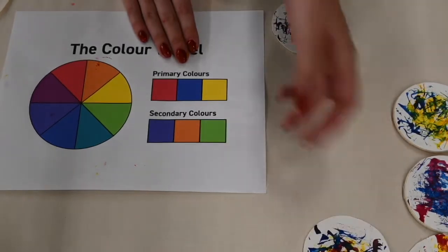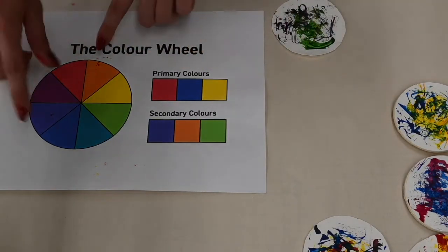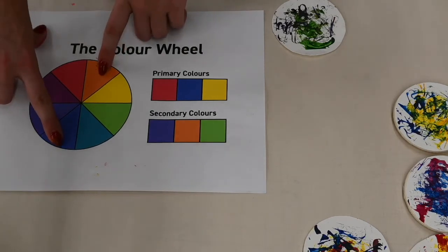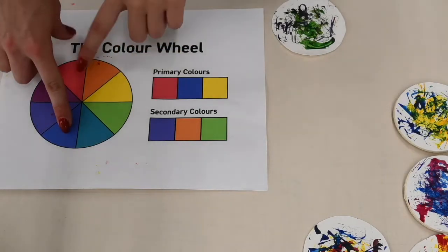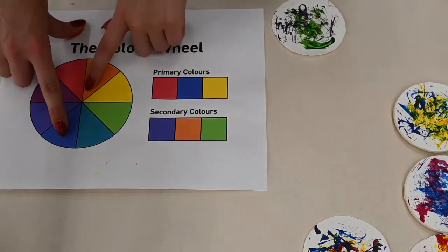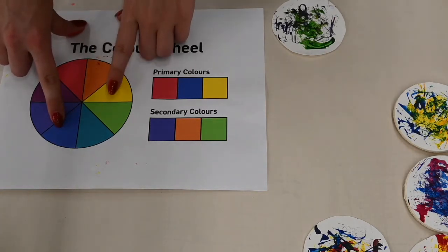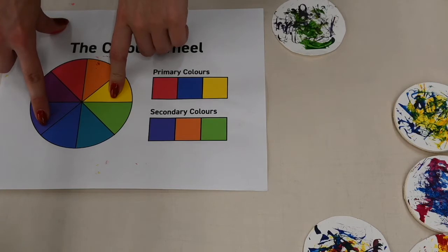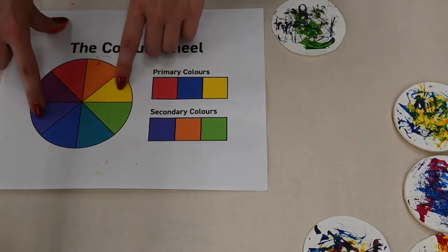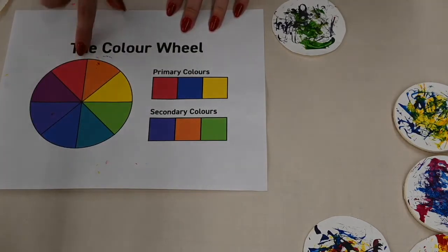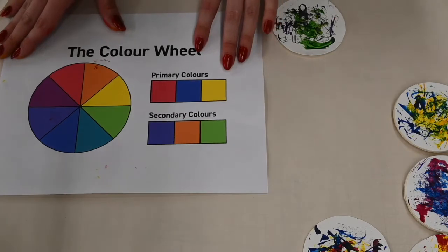Do you know what else will make brown? Our complementary colors. So that means the colors sitting across from each other on the color wheel. We know that blue and orange are complementary colors. They combine to create brown. We also know that yellow and purple are complementary colors. So the same thing applies. If we combine them, we're going to get brown. So you can actually make a lot of different browns from your color wheel. It's a fun activity to try sometime.